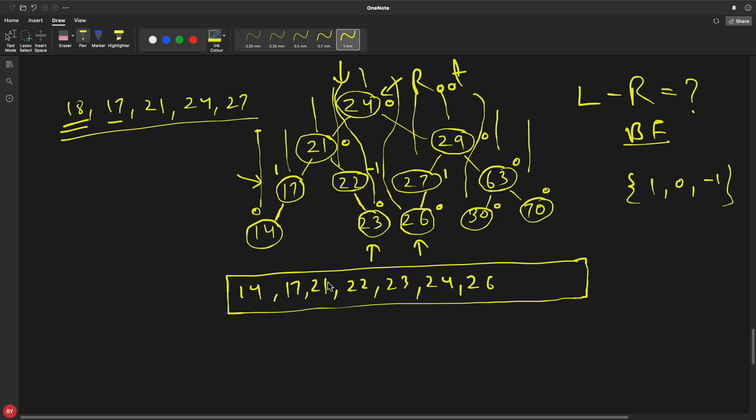If you're an engineer, you have this vision to see this tree from top. This whole nodes will look something like this: 26, and then you have 27, 29, and 30, 63, and 70. This is how it is going to look like.